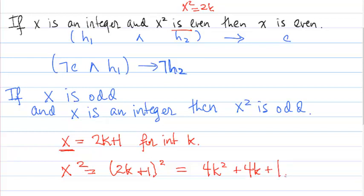Now the goal here is to show that x² is odd. And the only thing that we know about odd numbers is that they can be expressed in this format.